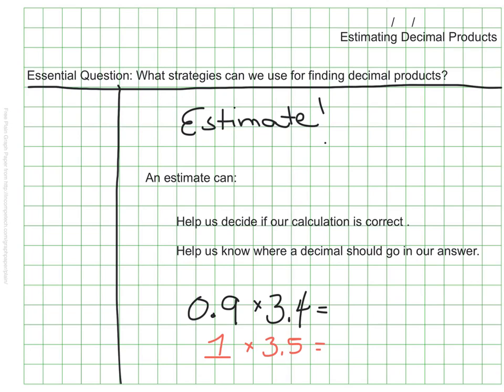So that's my estimate for 0.9 times 3.4. Let's just do a few more of these.